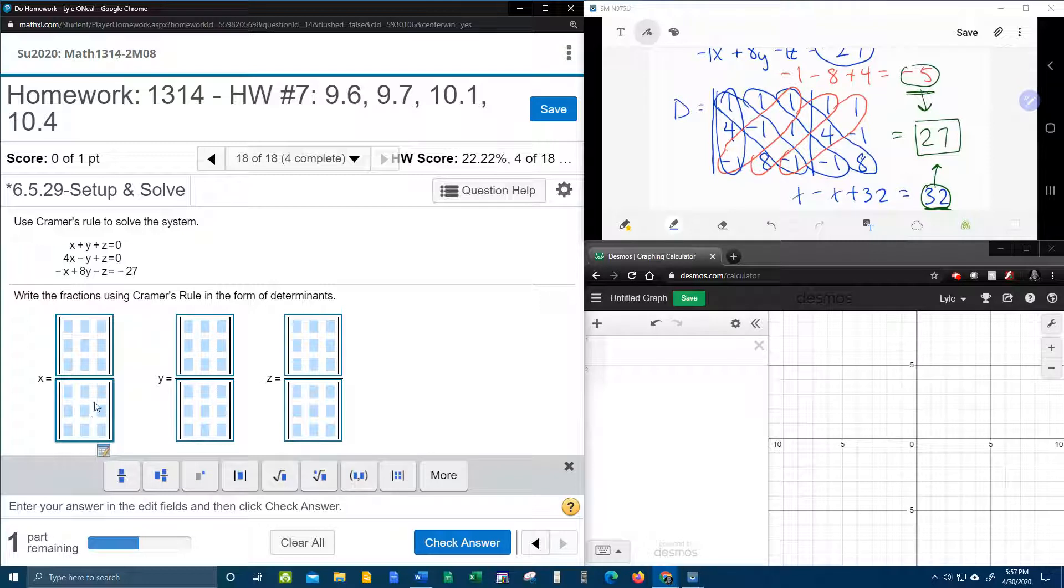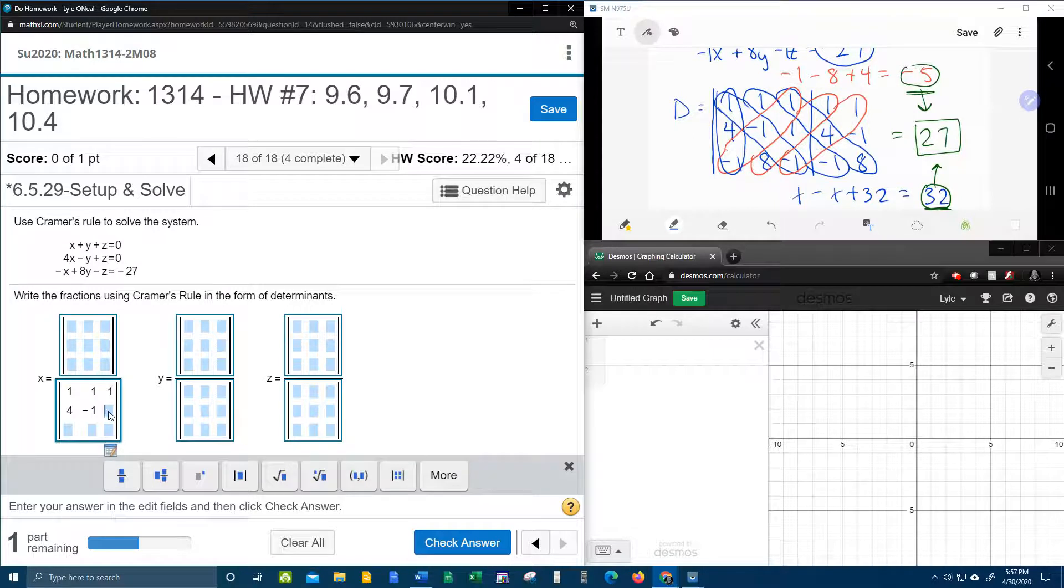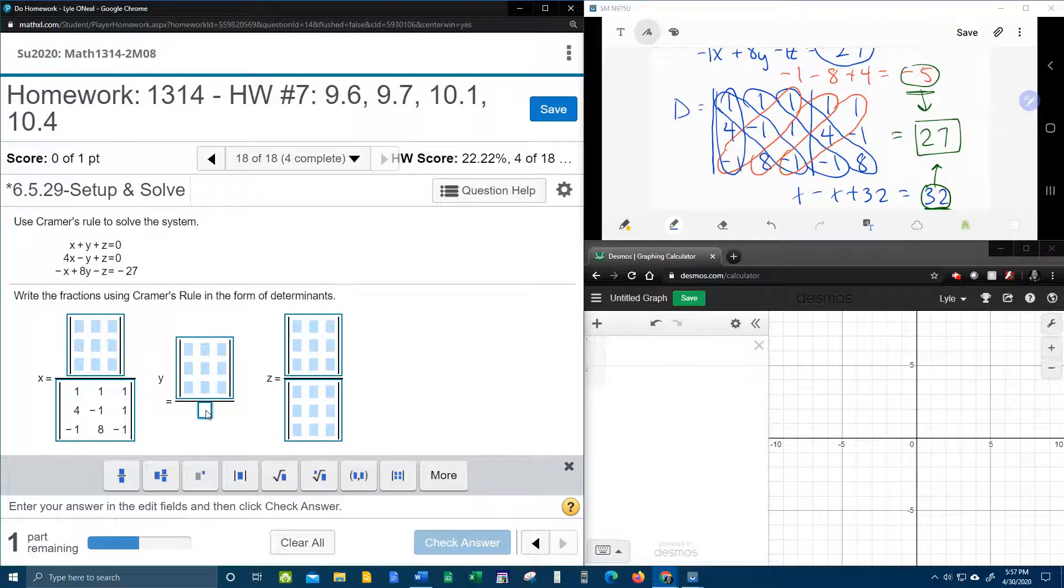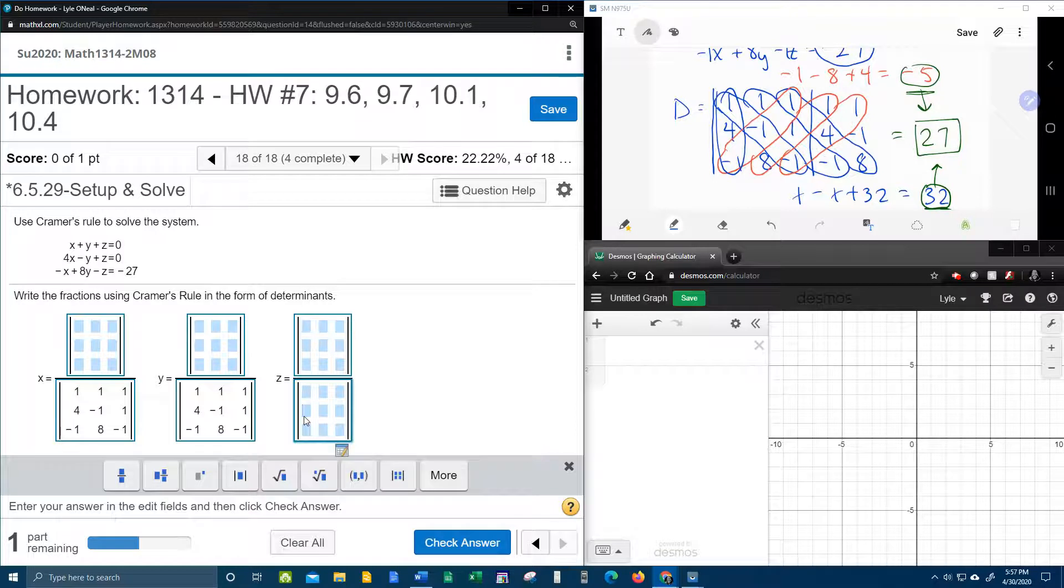All right. So, let's hope we don't miss a sign here. In the denominator, that is regular D, which I have pulled up on the screen over here. And that's going to be 1, 1, 1, 4, negative 1, and 1, and negative 1, 8, and negative 1. So, I wonder if it will let me copy and paste that. Control C. Control V. I bet it would if I didn't have that there. So, let's see if we can select all and delete. And now, Control V. Oh, yeah. So at least we can copy and paste and not have to put all that in three times.